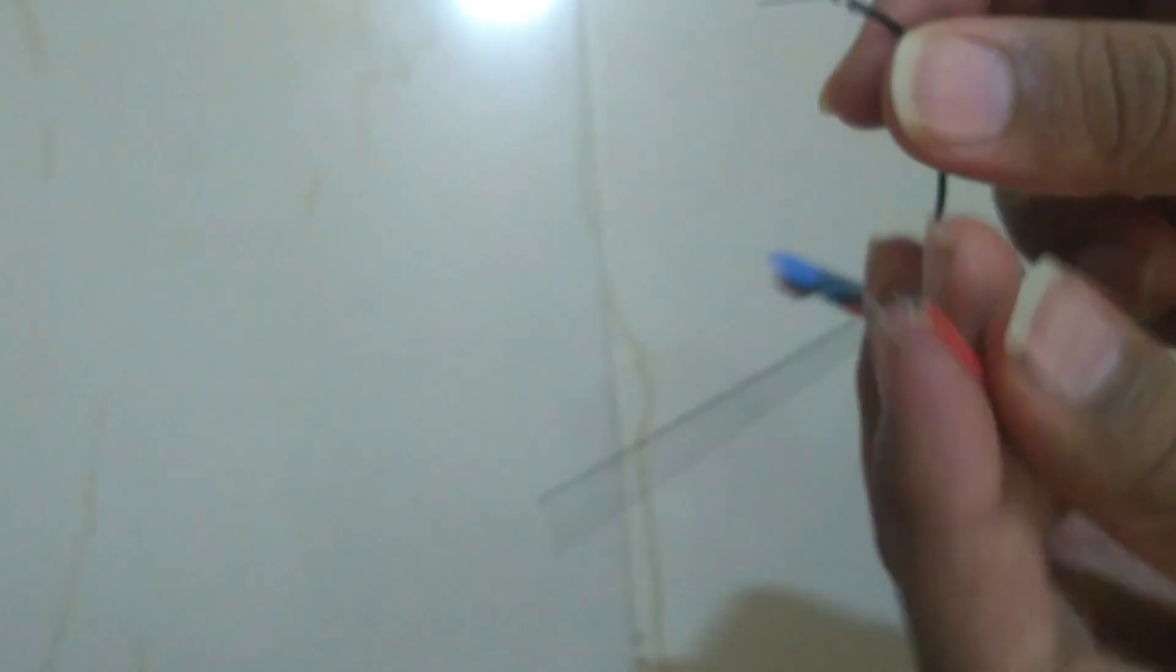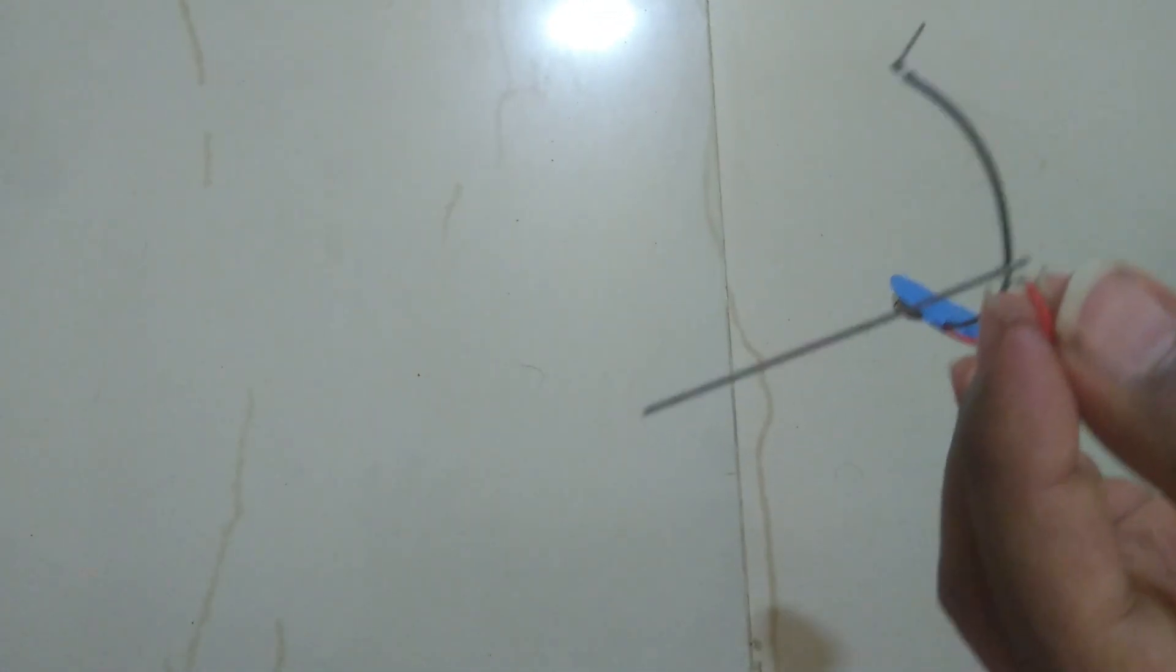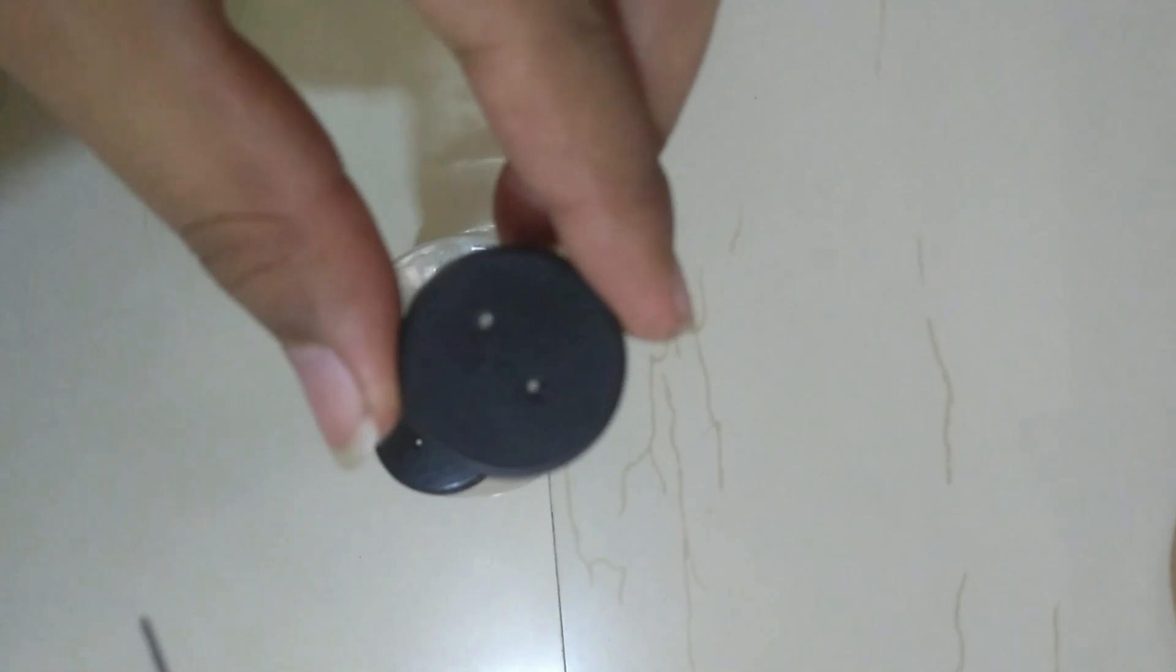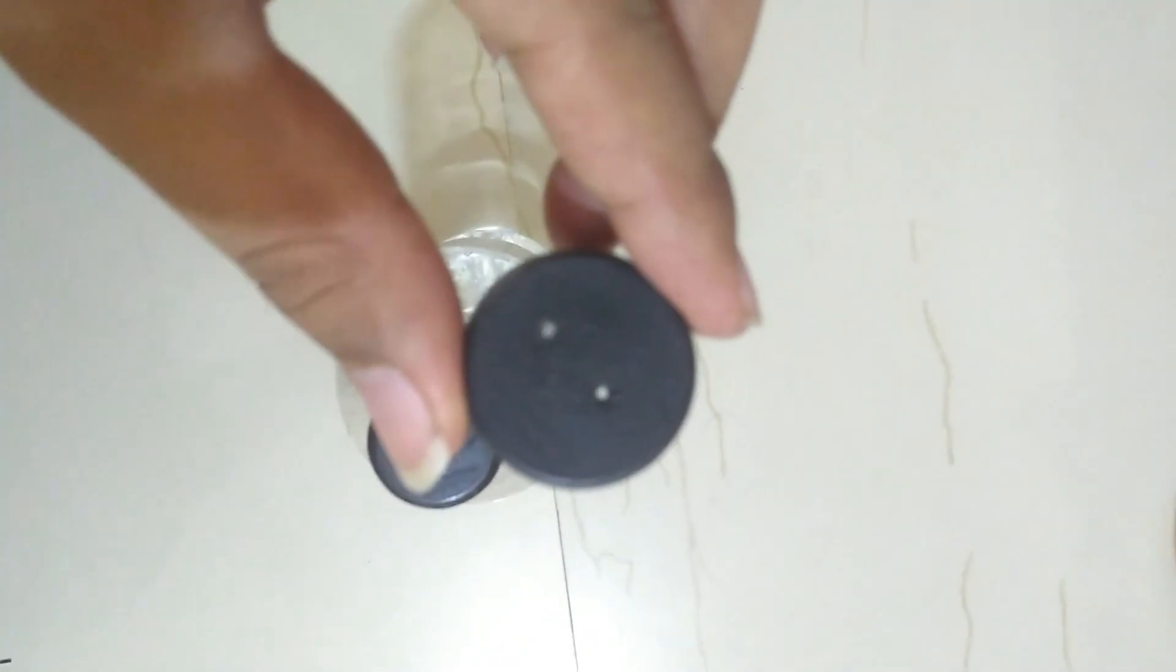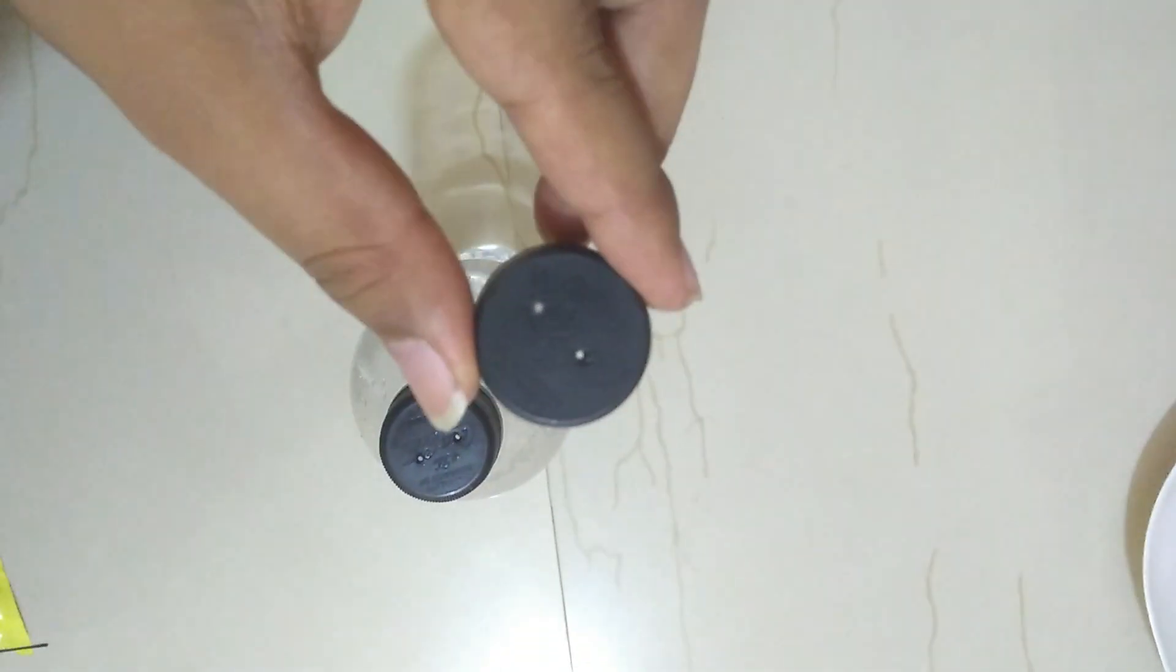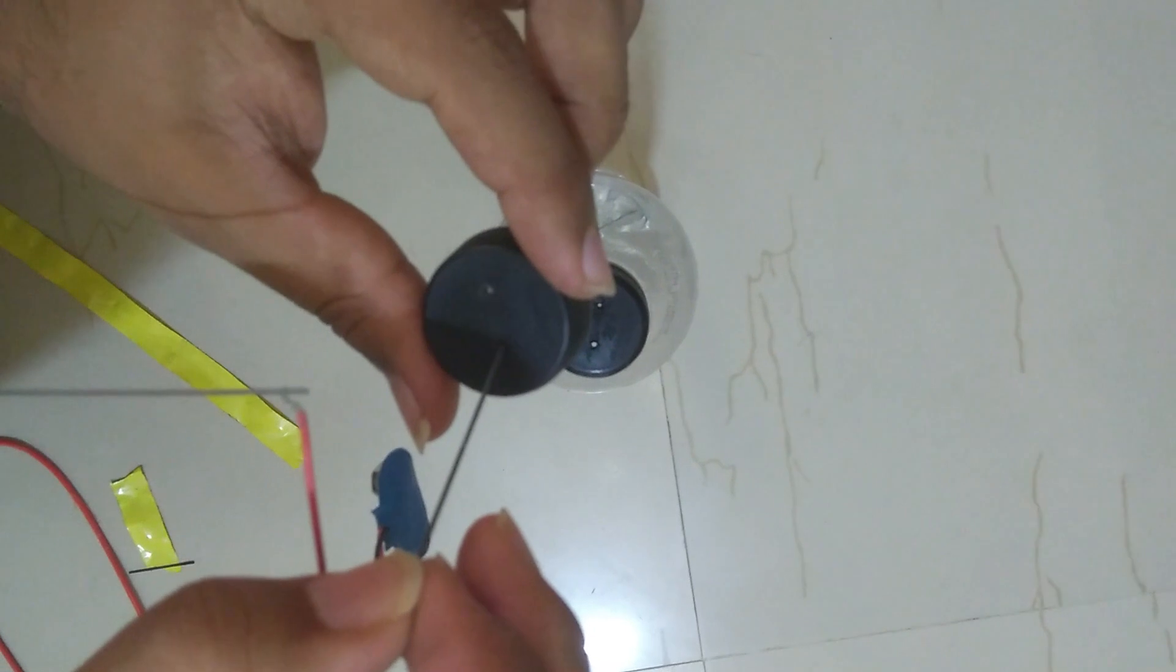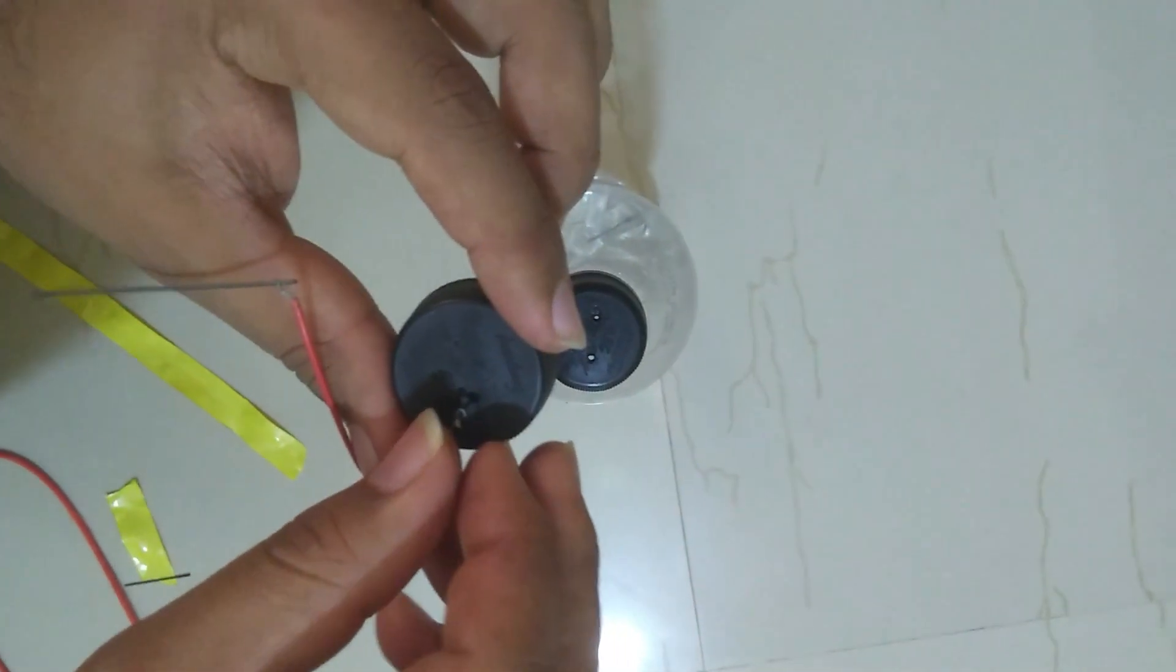Here I have used a 9 volt battery connector, but we can use any connector or directly USB cable wires. Take the cap of the 250 ml bottle and make two holes, preferably one centimeter apart. Here, instead of pencil leads, we can also use graphite rods.